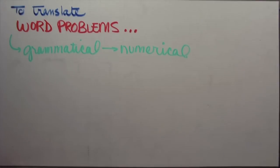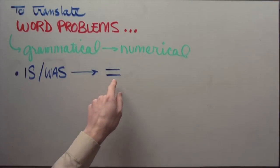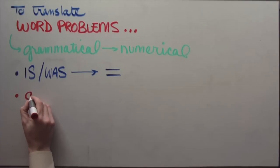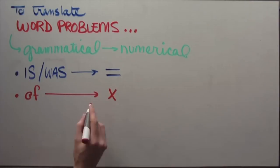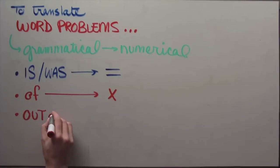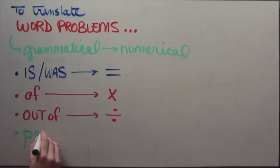The first thing you should immediately look for is the word is, or if there's a past tense maybe, was. Is or was translates to an equals. Look maybe for the word of. Of, most of the time is multiplication. There's a variety of it too. If you get something that maybe says out of, frequently that actually implies division instead. The same thing with the word per. Per can imply multiplication or division.